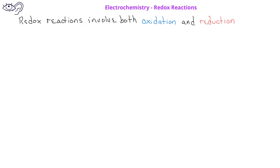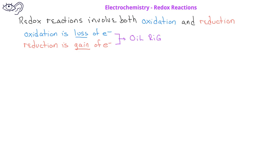There are two complementary processes involved in redox reactions. Oxidation is loss of electrons, whereas reduction is gain of electrons. You could remember these differences by the phrase OIL RIG, where OIL stands for oxidation is loss, and RIG stands for reduction is gain.